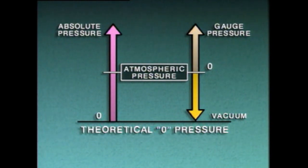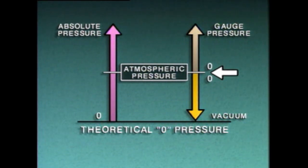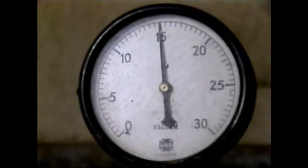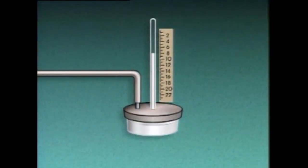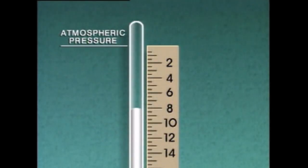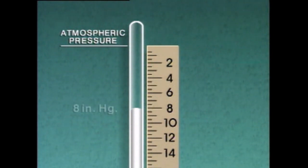The third pressure scale is the vacuum scale. Vacuum is pressure below atmospheric pressure. Like the gauge scale, the vacuum scale uses atmospheric pressure as its starting point, but it moves toward theoretical zero pressure. The closer it gets to theoretical zero pressure, the greater its value. On vacuum gauges, vacuum is often indicated in inches of mercury. This refers to the level of mercury in a vertical column measured downward from a level representing atmospheric pressure. If the level of mercury is 8 inches below the level representing atmospheric pressure, then the amount of vacuum is 8 inches of mercury, sometimes abbreviated inches Hg.